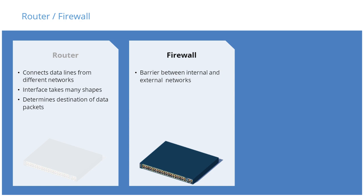However, the two perform different functions. In a very simplified way, routers allow networks to communicate with each other, while firewalls limit some traffic between networks.